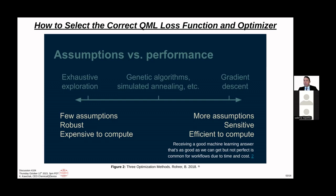For larger QML and ML workloads, we're typically talking about gradient descent. Gradient descent was the first one — you have a landscape and you're going down into the well, trying to find minimums with loss. You're making more assumptions; it's more sensitive, but a lot easier to compute. If you don't set the learning rate correctly, even this efficient method could still take forever.